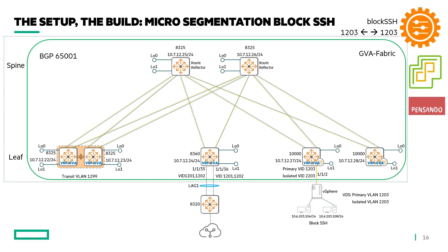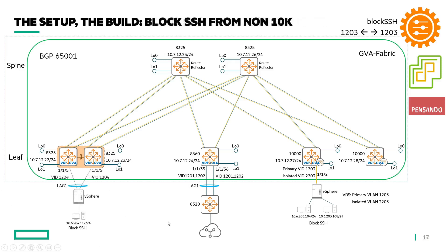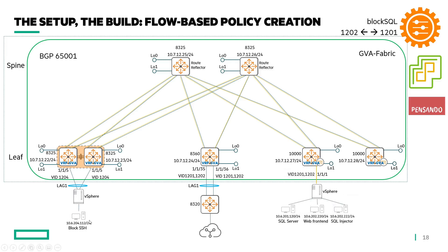Once we have the private VLANs, we can redirect traffic to the Pensando security chips on the 10K for inspection. We'll also cover a scenario where you have existing switches that are not 10Ks but you still want to protect traffic from a VM on a non-10K switch coming into the 10K switch — I'll demonstrate how to set up policies to block SSH in that scenario.